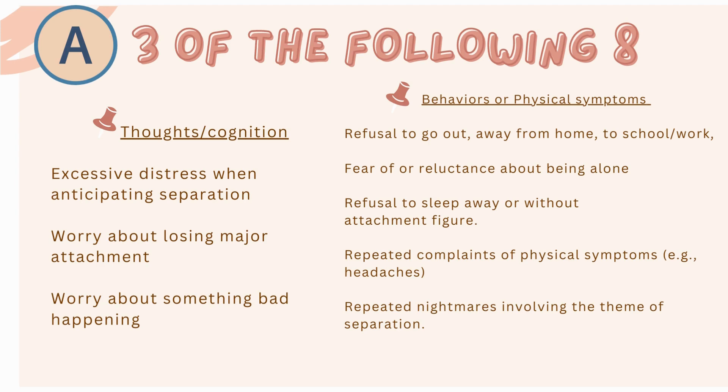Their behavior usually mirrors avoidance behavior — they are trying to avoid separation. So they will refuse to go out, go away from home, or go to work. There is a reluctance or fear of being alone, and they don't want to sleep away from the attachment figure. They may also constantly complain about not feeling well, usually around anticipated separation, and there may be nightmares involving themes of separation.